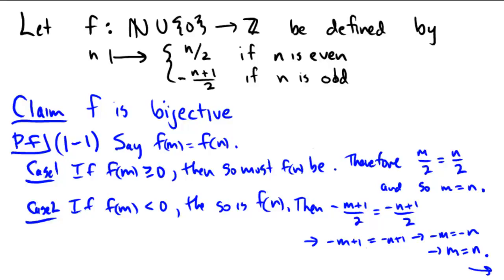Subtract 1 from both sides: negative m equals negative n, and then multiply by negative 1 to yield m equals n. So in either case—if they were both non-negative from the top branch or both negative from the bottom branch—if f(m) equals f(n), then m equals n, and we are injective.